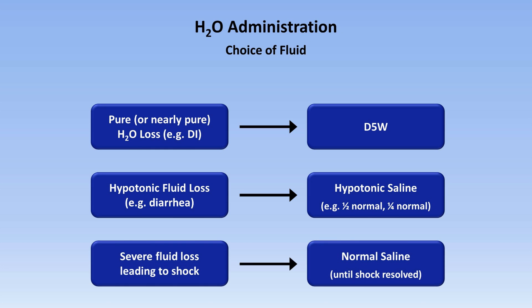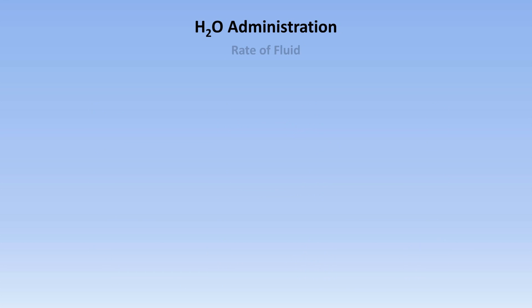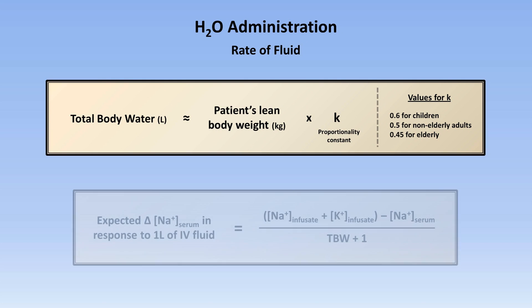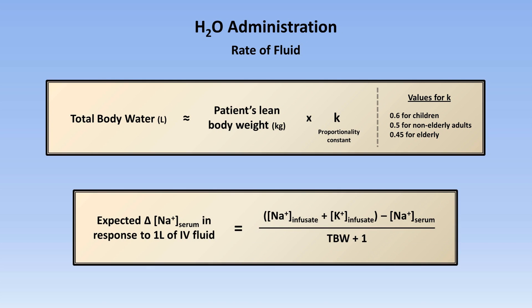And hypernatremia accompanied by hypovolemic shock should be treated with normal saline until the shock is resolved, at which point you switch to one of the other therapies. When it comes to the rate of fluid administration, there are two equations to remember: that for the estimate of total body water, and that for the expected change in serum sodium in response to infusion of one liter of any IV fluid.